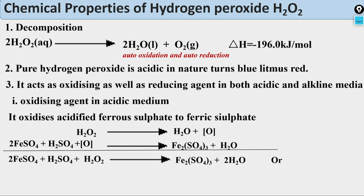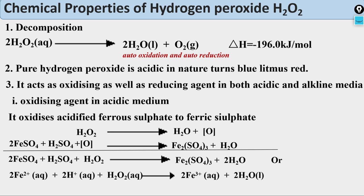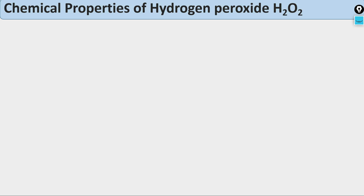The electronic (ionic) equation for oxidizing action in acidic medium: Fe²⁺(aq) + 2H⁺(aq) + H₂O₂ → Fe³⁺ + H₂O. Here the oxidation number of iron goes from +2 (ferrous) to +3 (ferric), confirming oxidation in acidic medium.